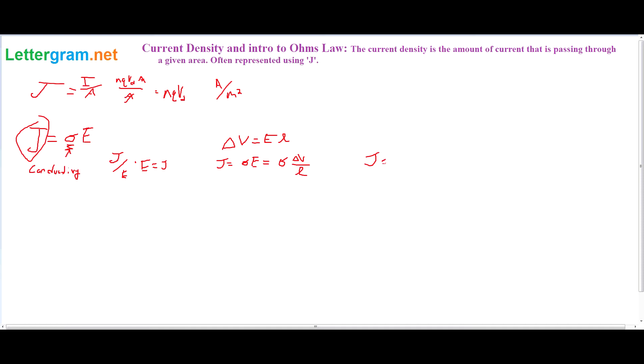And if we keep working with that, J is equal to I/A, which is the current divided by the area, which is right above.